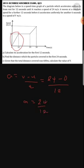The last question says the diagram below is the speed-time graph of a particle which accelerates uniformly from rest for 12 seconds until it reaches a speed of 24 meters per second. It moves at a constant speed for a further 12 seconds before accelerating uniformly for another 6 seconds to a speed of V meters per second. Part A: calculate the acceleration in the first 12 seconds. Acceleration equals final velocity minus initial velocity over time taken: 24 minus 0 over 12 equals 2 meters per second squared.